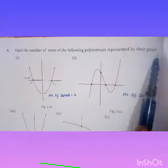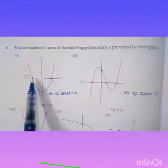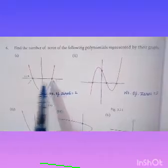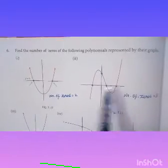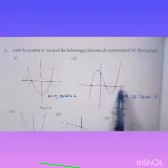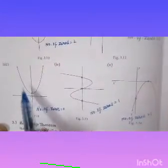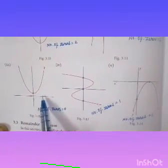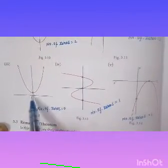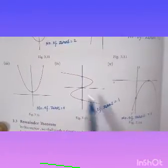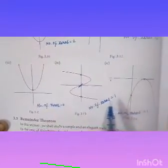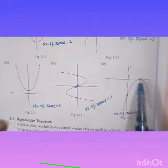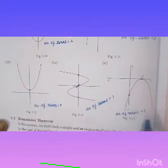Sixth problem: find the zeros of polynomials represented by graphs. First curve intersects the x-axis at two points, so number of zeros is 2. Second curve intersects at three points, so number of zeros is 3. Third curve does not touch the x-axis, so number of zeros is 0. Fourth and fifth curves each intersect the x-axis at one point, so number of zeros is 1 each.